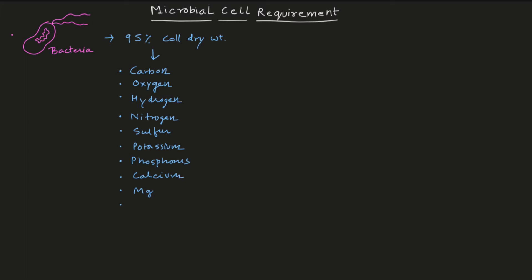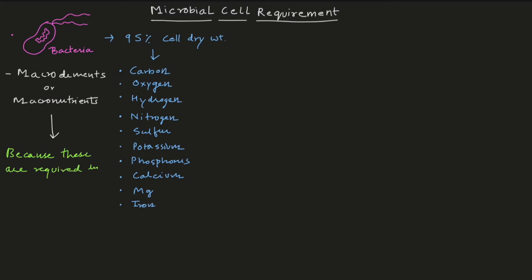Let me write these down as macro elements or macronutrients. An important point is: why are they called macro elements or macronutrients? We use the word 'macro' because these are required in large quantities. Bacterial cells specifically require these elements in large amounts.